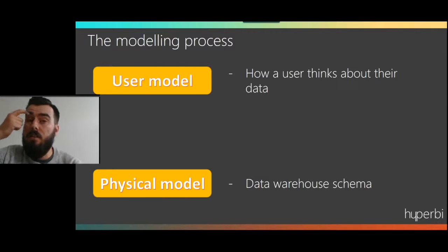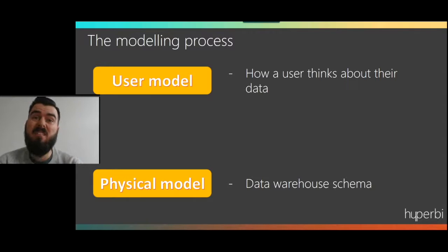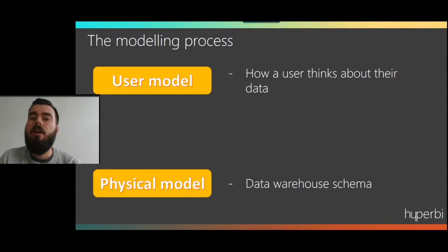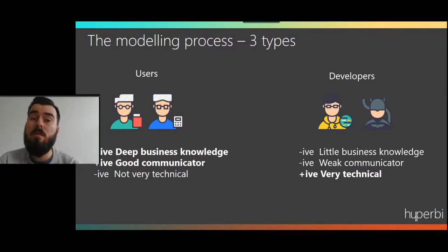What we generally have is a user model — how users think about the data, how they already analyze it in some shape or form. Typically when you start a warehouse project, it's not because a business doesn't have any analytical capabilities. It's just that they've been doing it one way, typically in Excel, and they're hitting problems. So they'll ask for somebody to build them a warehouse. Users already know about their data and are very knowledgeable about what they actually want, but the physical model may get a little bit out of sync. Our users have incredibly deep business knowledge and are generally quite good communicators, though not always.